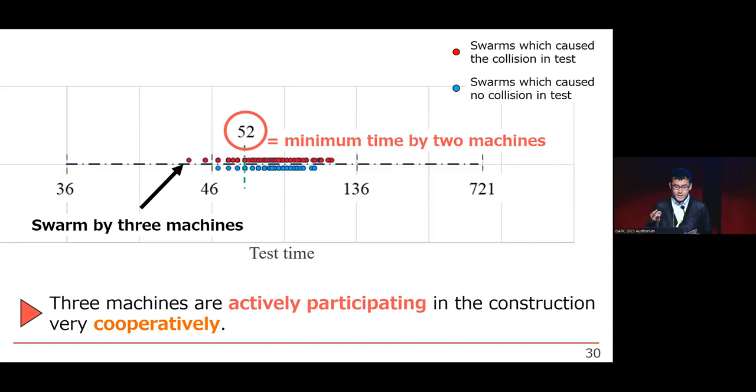This graph shows the execution time of carrying task. Naturally, three machines can carry the soil in a shorter minute than two machines. This is because all of three machines commit to the carrying task without sabotage.